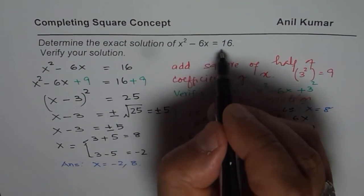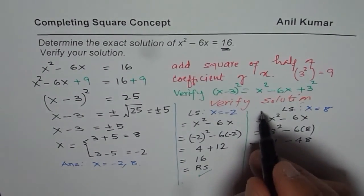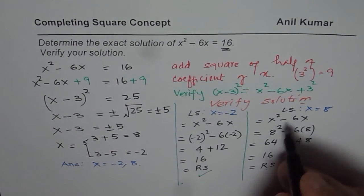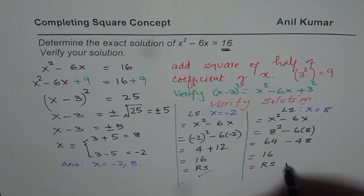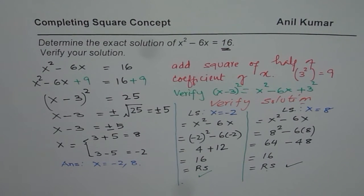Perfect. Right side is 16. If left side is right side, both are same, then the solution is correct. So, that is how you actually solve a quadratic equation and check your solution. I'd like you to practice some more questions based on this and then move on to the next concept. Thank you and all the best.